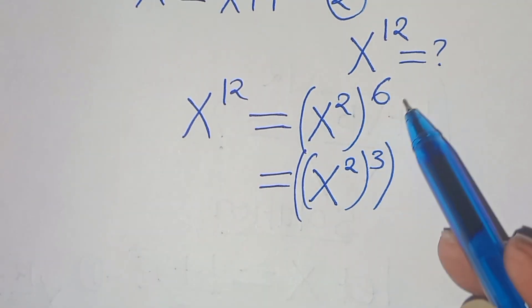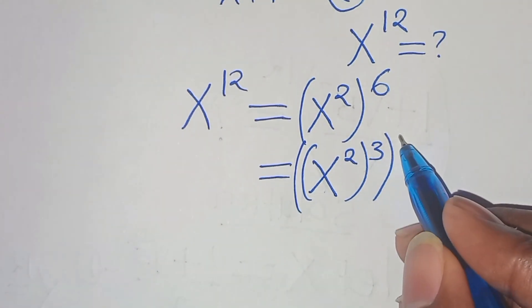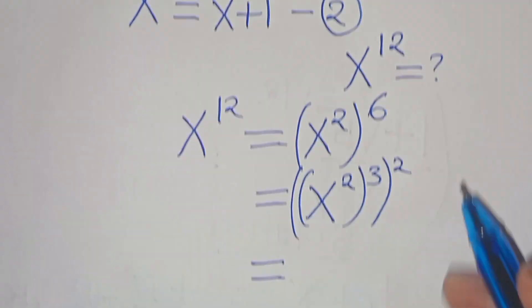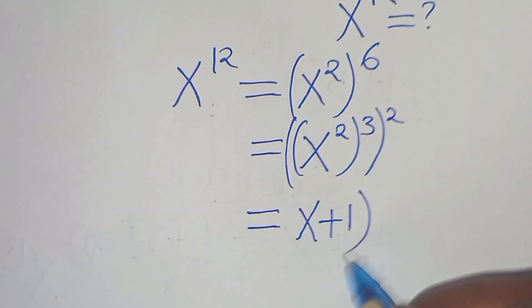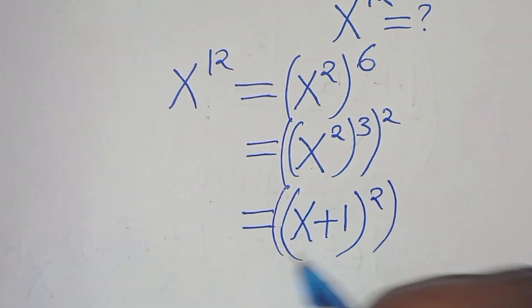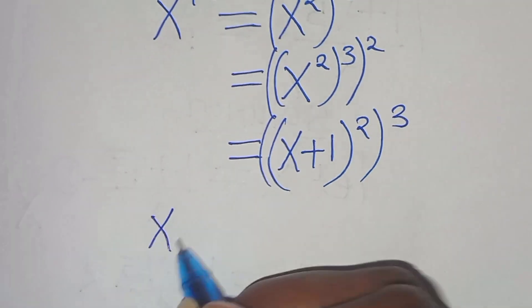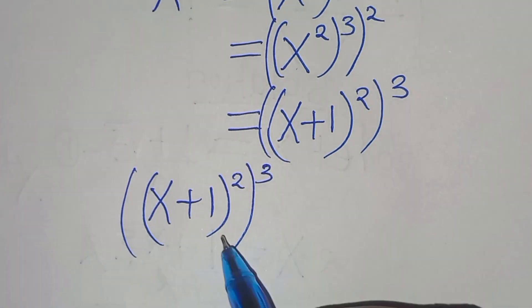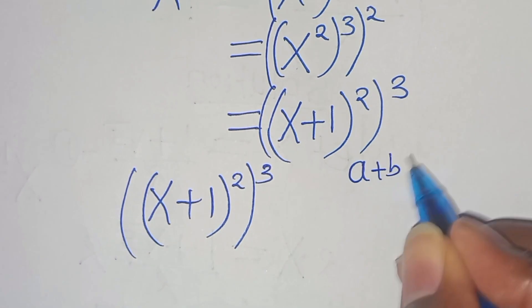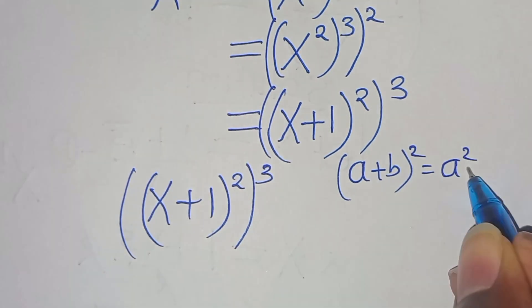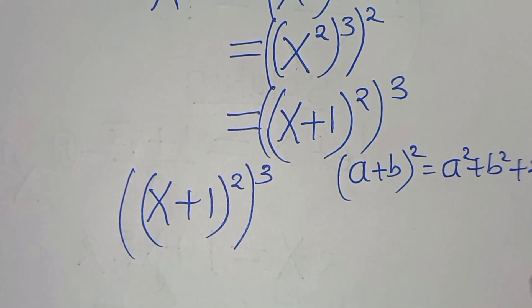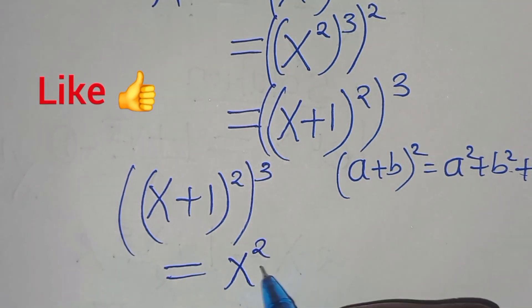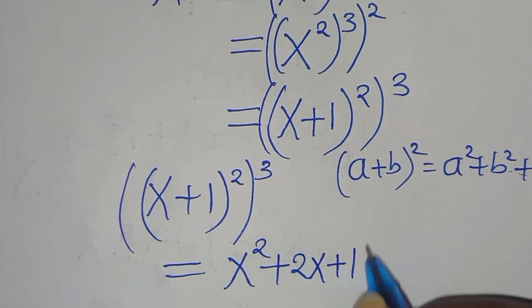We can express x squared to the power of 3 raised to the power of 2, substituting x squared equals x plus 1. So we have x plus 1 raised to the power of 2, then raised to the power of 3. Now x plus 1 to the power of 2 is in the form a plus b to the power of 2, which equals a squared plus b squared plus 2ab.